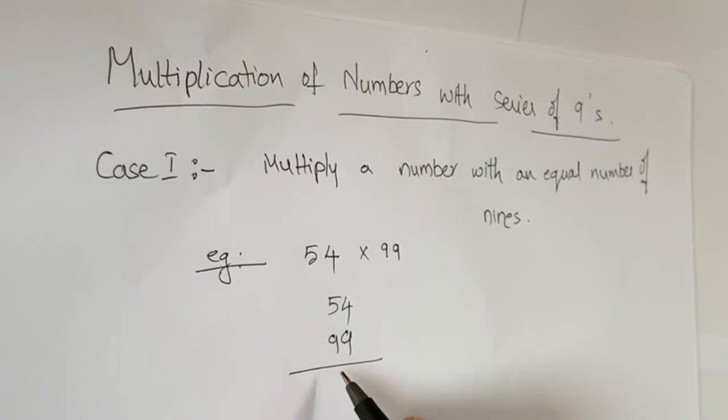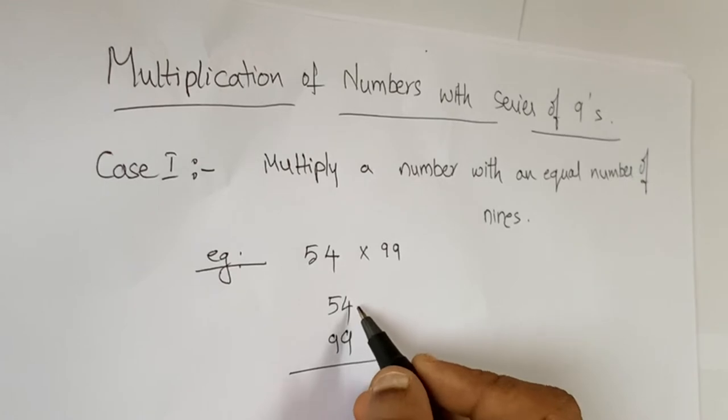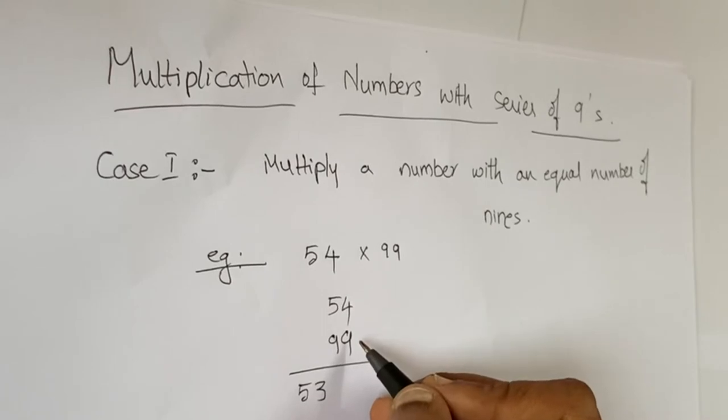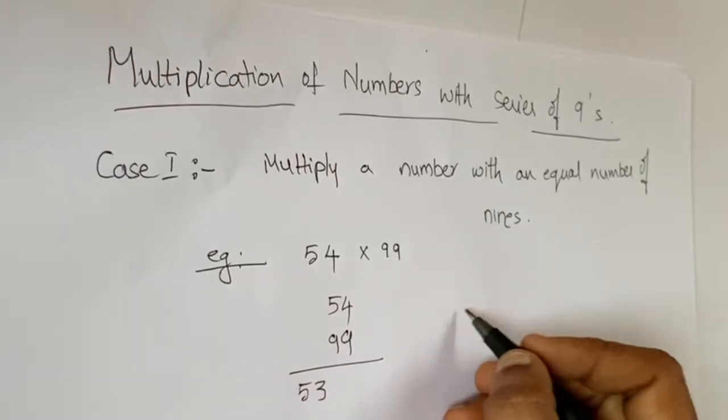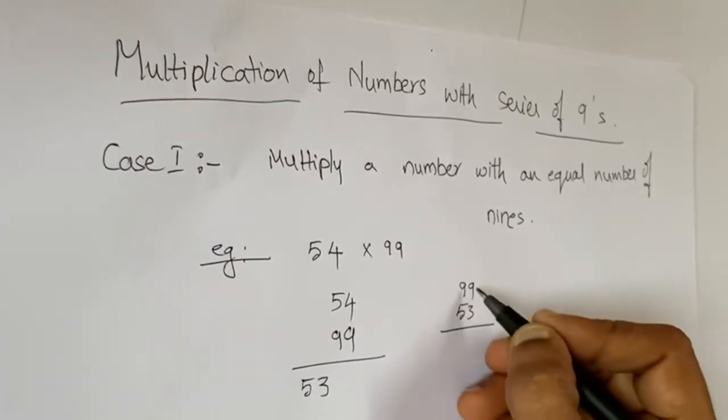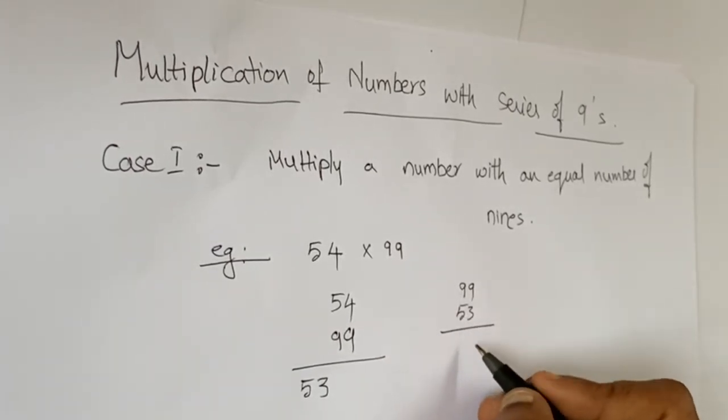We have to reduce or deduct one number from the multiplicand, so 54 minus 1 means 53. Next, we have to subtract this number, that is 53, from 99. So 9 minus 5 is 4, 9 minus 3 is 6.